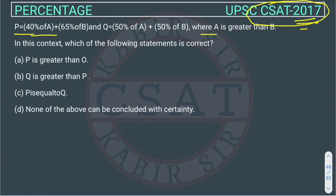The question is: P equals 40% of A plus 65% of B, and Q equals 50% of A plus 50% of B, where A is greater than B. They have given that A is greater than B. We know only this and we have two equations. We have to find out which of the following statements is correct.